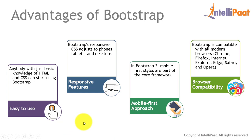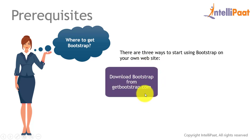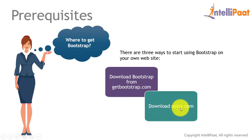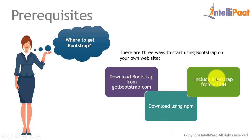Now let us talk about the prerequisites of Bootstrap and from where to get it. There are many ways: first, you can download the Bootstrap files from getbootstrap.com. Second, you can download using npm — simply run npm install bootstrap, which will download the latest Bootstrap version package including bootstrap.css, bootstrap.js, and all related files. Third, you can include Bootstrap from a CDN. Any one of these three ways you can use to implement Bootstrap in your Angular applications.